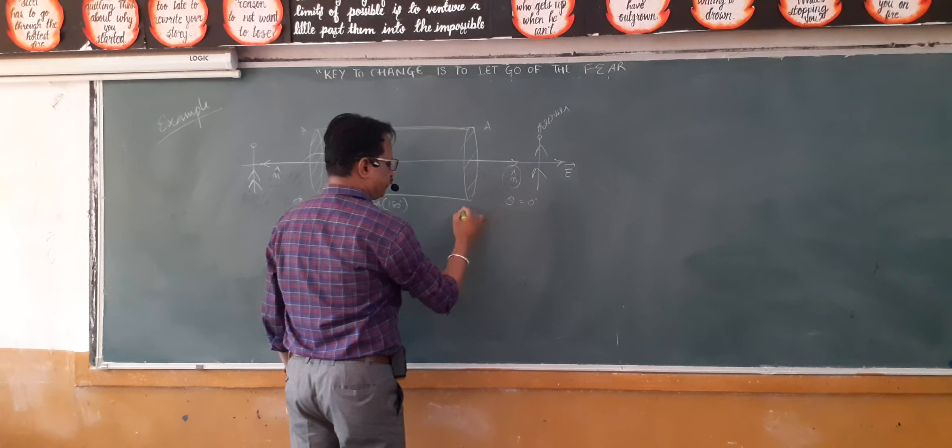Then what about the lateral surface - the curved surface of the cylinder? Here the field is in this direction, normal is like this. The angle between them is 90 degrees, so the flux through the curved surface is zero.